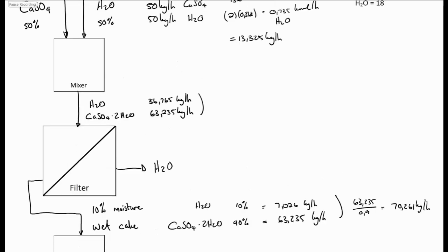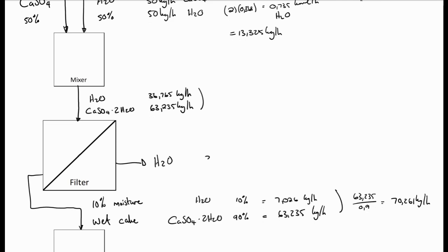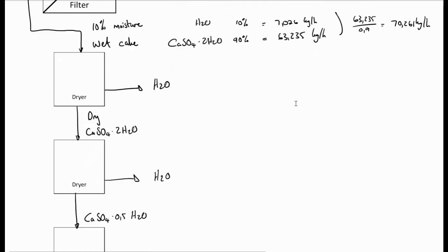Next, we need to calculate the water leaving the filter. Now, we know that 36.765 kilograms per hour water came into the filter press. And we know that 7.026 kilograms per hour water was left on the filter cake as part of the wet filter cake, which means that 29.739 kilograms per hour of water left as water from the filter.